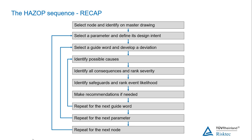What could cause these particular deviations? For example, are valves closed or blocked? What would the consequences of this particular deviation be? These are all the consequences in terms of safety, health, environment, asset damage, or operation.